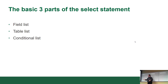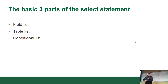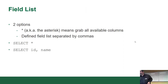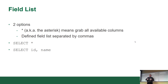A predicate is basically a Boolean operation — it's the inside of an if statement. When we talk about the field list, last week you saw me demonstrate the asterisk, which means grab all available columns. Or you can do a defined field list using comma-separated field names — for example, SELECT ID, name.